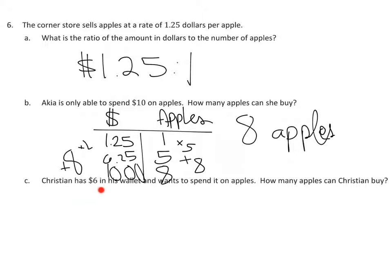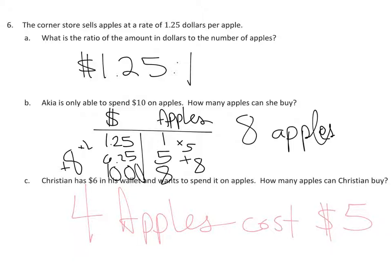At the end, it says Christian has $6 and wants to spend it on apples. How many apples can Christian buy? We already discovered that 5 apples cost $6.25. Can Christian buy 5 apples if he only has $6? No — it costs $6.25 and he doesn't have a quarter more. So he can only buy 4 apples. You can test it: $1.25 times 4 is $5, so 4 apples cost $5, but 5 apples cost $6.25. I hope that helped. If you have more questions about ratios and rates, please talk to Mrs. Steinerland or myself. Thanks.